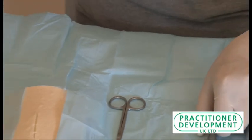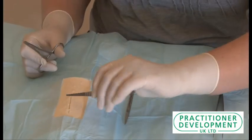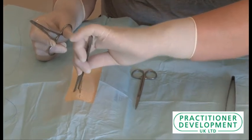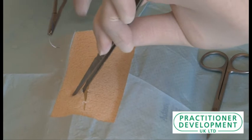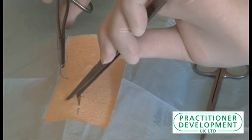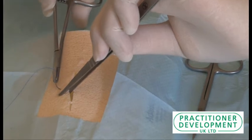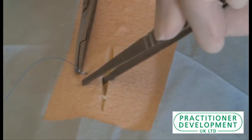We're going to use our toothed forceps and we are going to lift the skin up and put the needle at a 45 degree angle and go into the skin, letting the natural curvature of the needle guide us through.